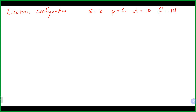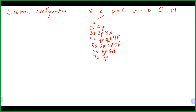You can recreate for yourself the order in which electrons go in by just remembering where each of those orbitals begin and at what energy level. S starts on the first, P on the second, D on the third, and F on the fourth. At that point you just fill in the numbers underneath each of those and you'll have the electron configuration order that you need.